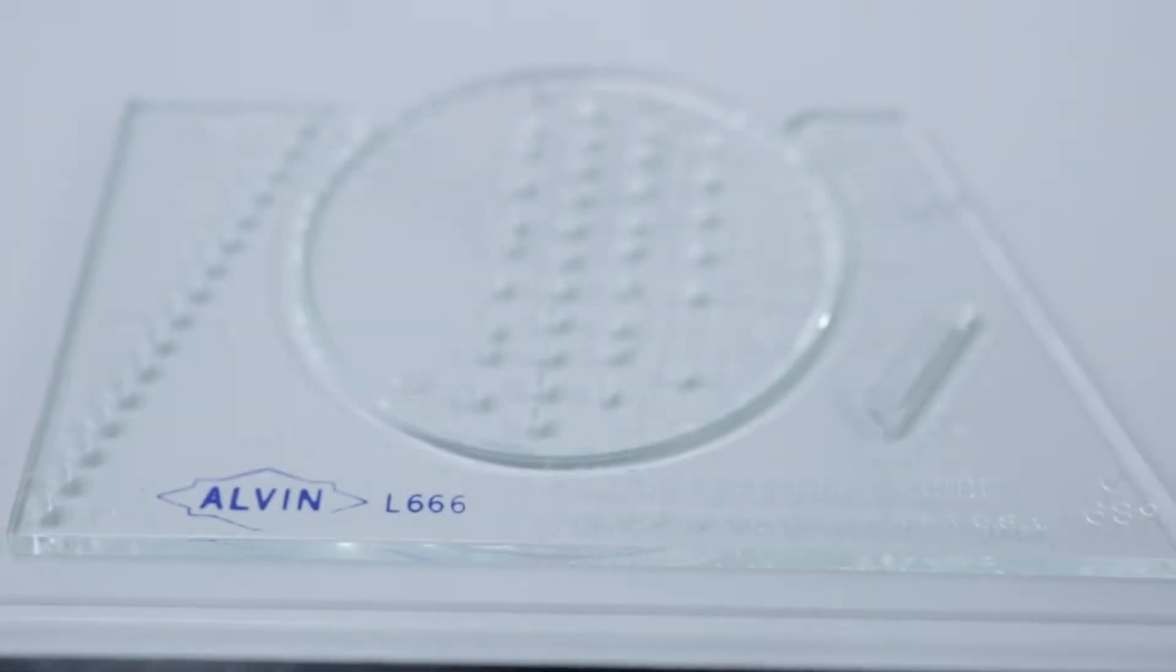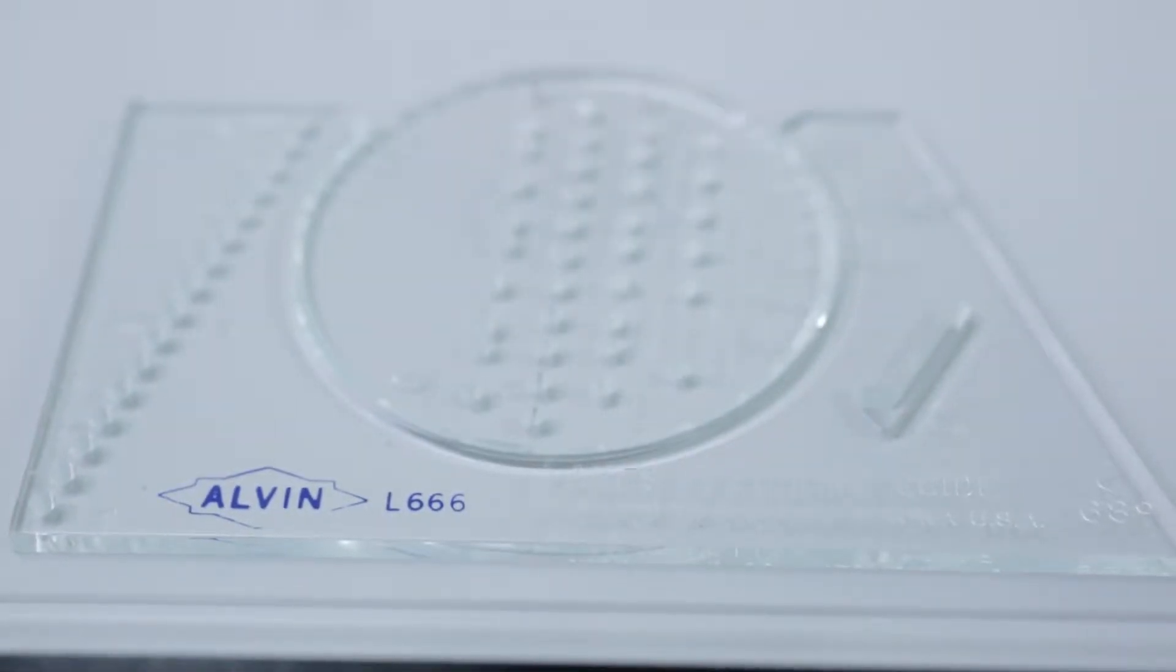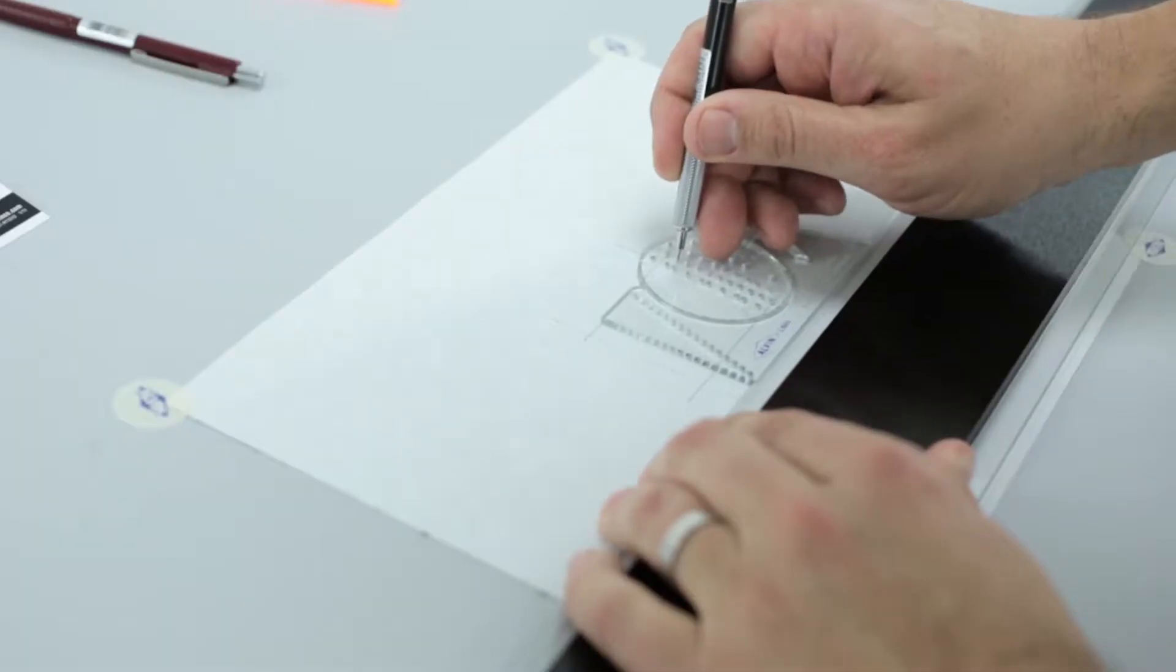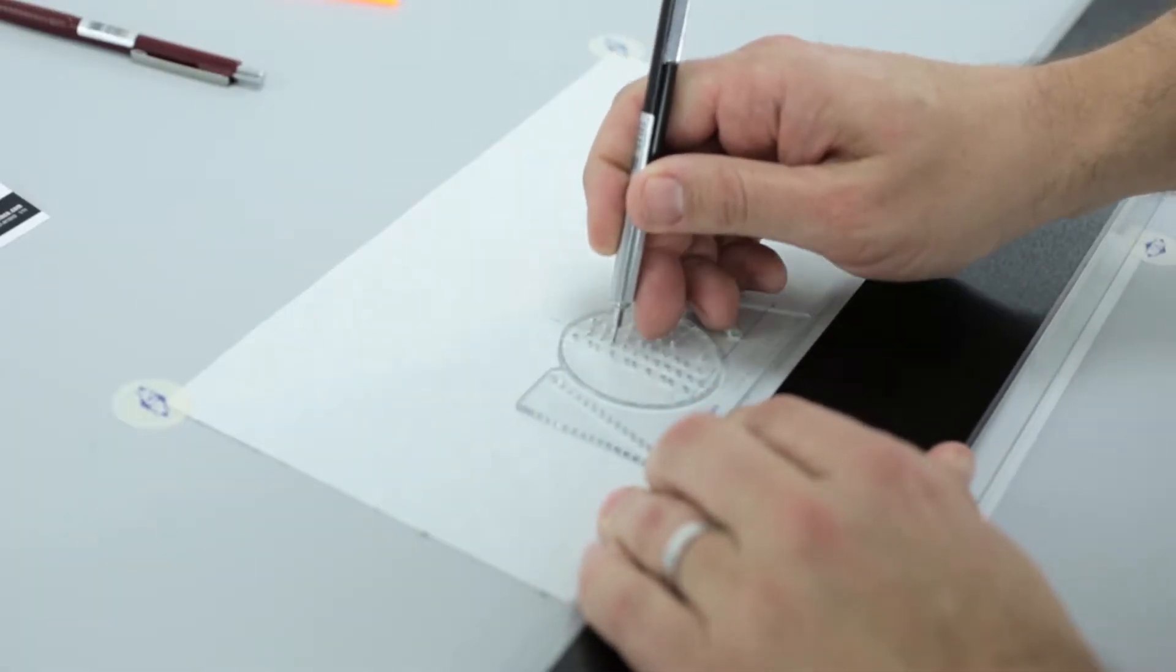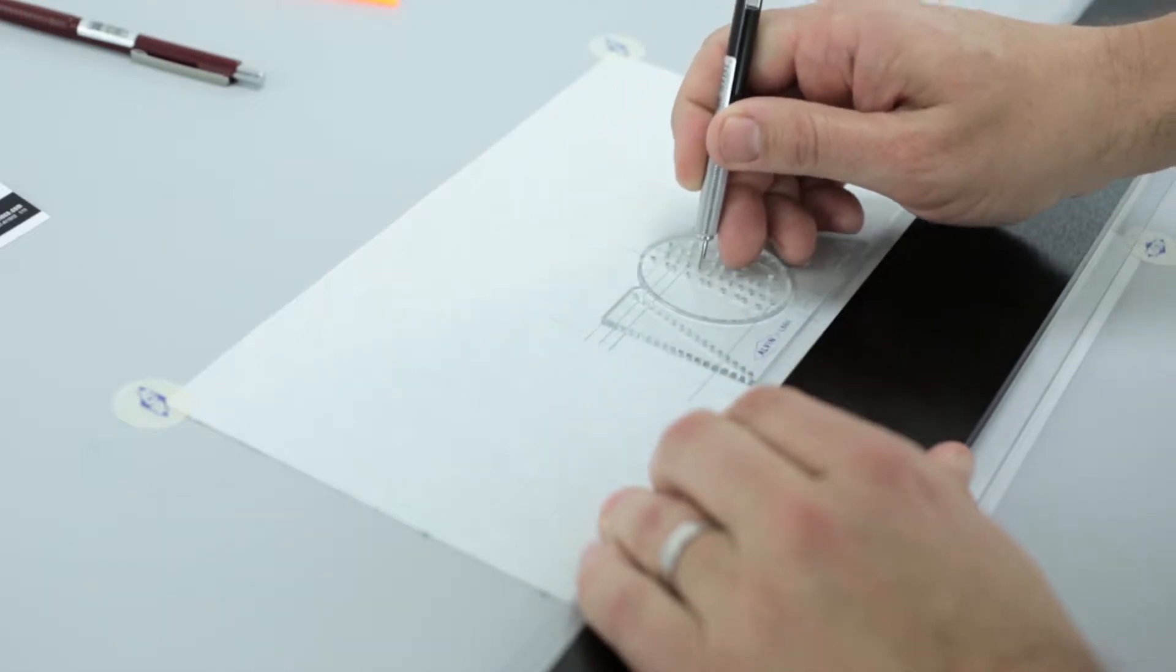This lettering guide, sometimes referred to as the AIMS lettering guide, may look a little complicated, but it's not. First off, you'll want to place the lettering guide on a parallel rule or t-square.